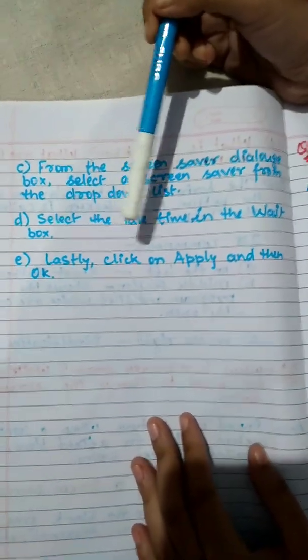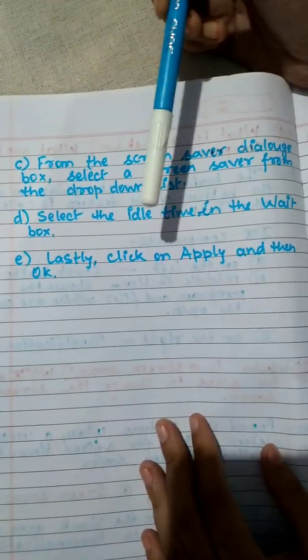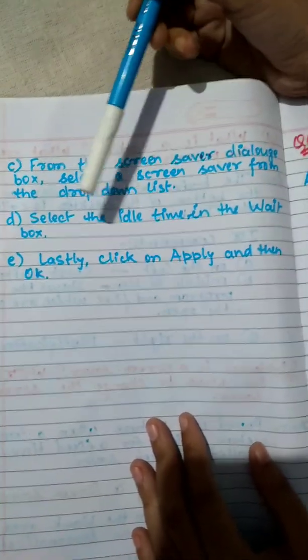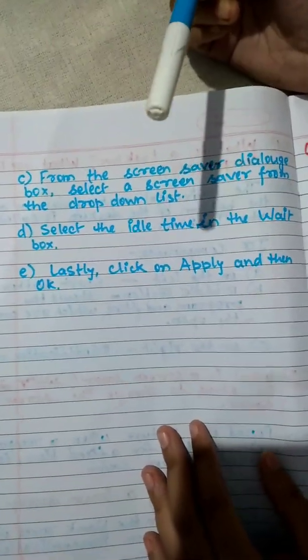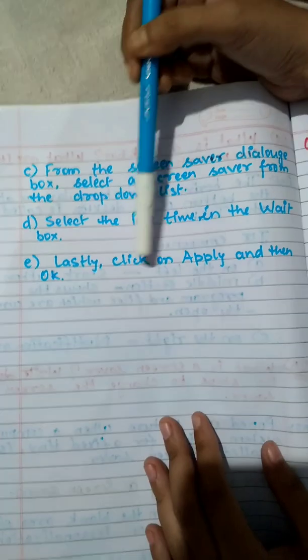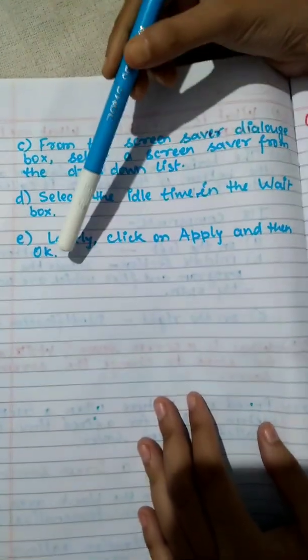In the wait box kids, you will get lots of time options like 1 minute, 30 seconds, 2 minutes. It always depends upon what idle time you want. At last you have to click on apply and then ok.